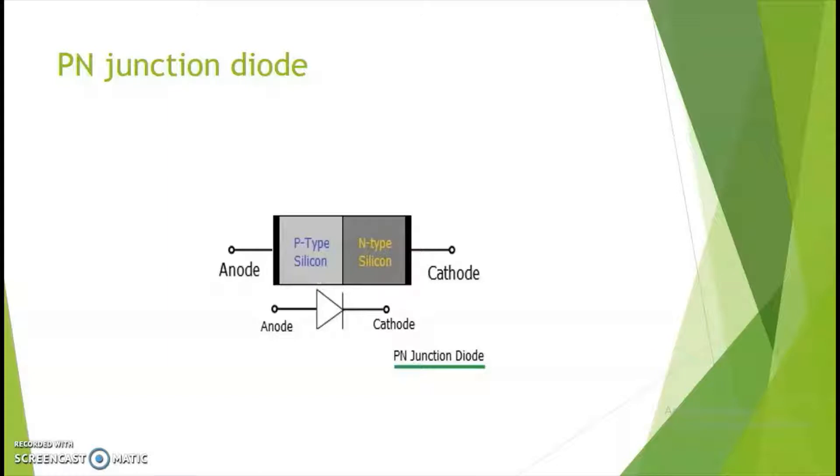Actually, a semiconductor bar is taken and one half is doped with trivalent impurity and another half is doped with pentavalent impurity. Hence, a junction is formed here. The junction shown here by a straight line is only for illustrative purposes and for ease of understanding. In real life, it's an uneven edge.